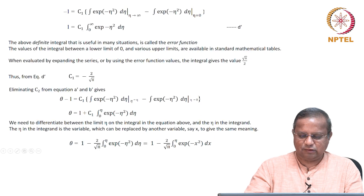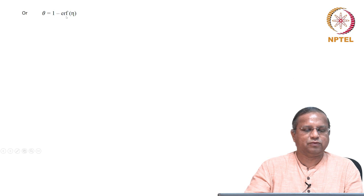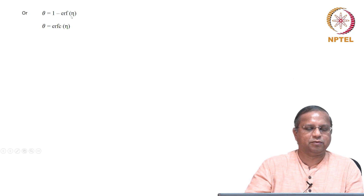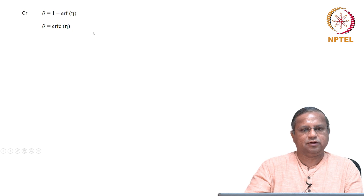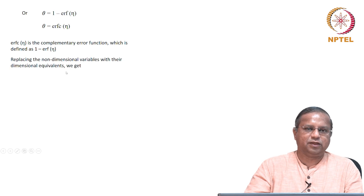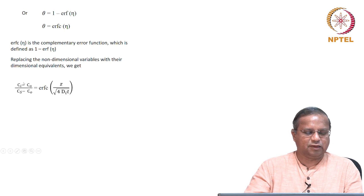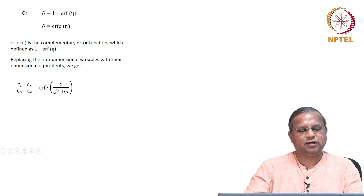This is nothing but the error function of η, so θ equals 1 minus erf(η), which is called ERFC — the complementary error function of η. Replacing the non-dimensional variables with their dimensional equivalents, we get: (cᵢ − c₀)/(cₛ − c₀) equals ERFC(z / √(4Dᵢt)), which is our η — a nice compact solution.